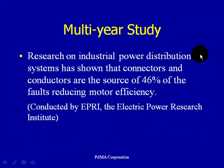Research on industrial power distribution systems shows connectors and conductors are the source of 46% of faults reducing motor efficiency. This is very important: if we're reducing the efficiency of the motor, we're costing more to operate it at that lower efficiency. In today's environment with higher energy costs, it's critical to ensure our motors are running at the optimum efficiency they were designed to operate at.